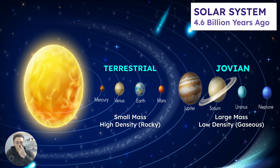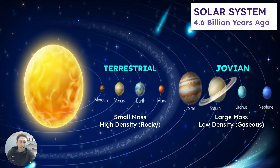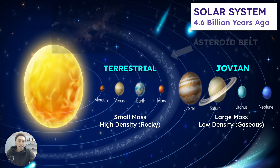The other four, the outer four, are called Jovian. These are much bigger planets: Jupiter, Saturn, Uranus, and Neptune. They are much bigger and they are low density — they are gases. You can't actually stand on Jupiter; you would fall through, as it is a heavy gas.